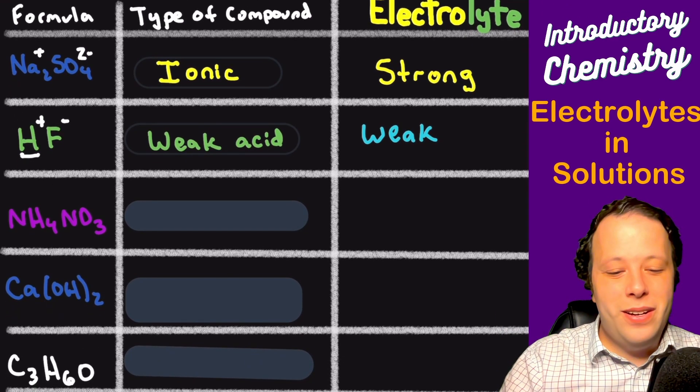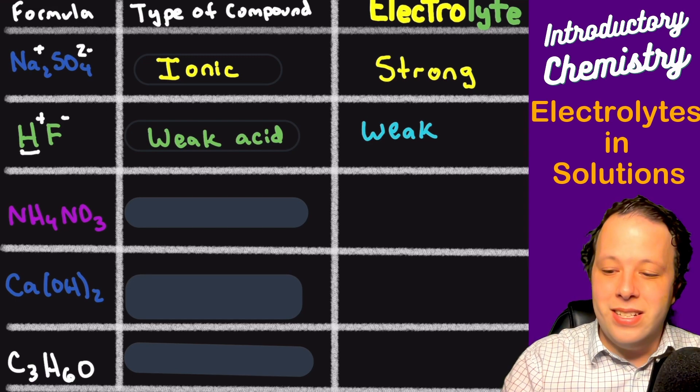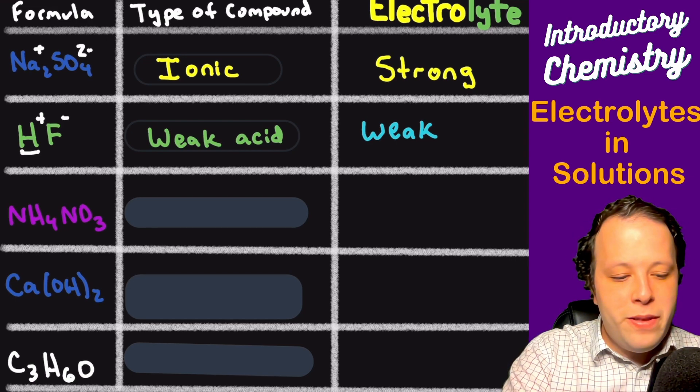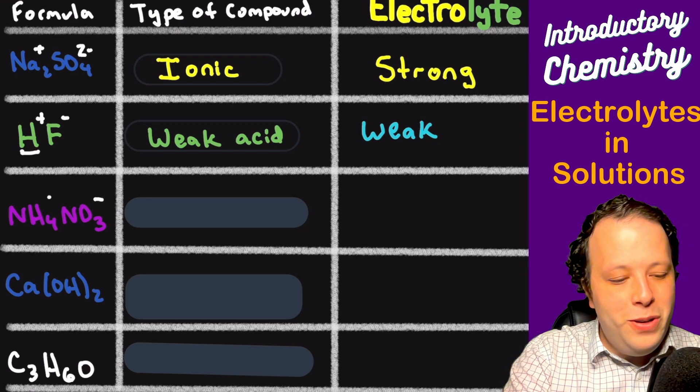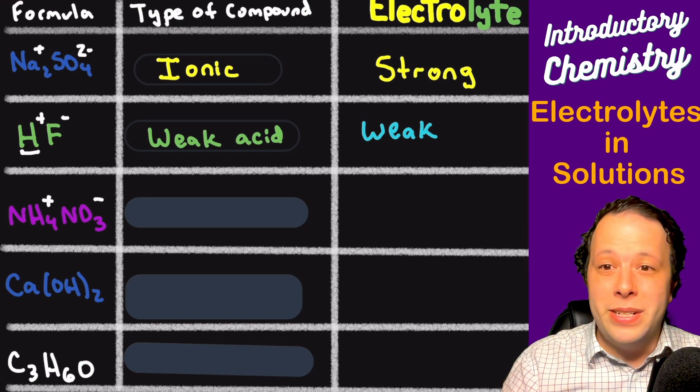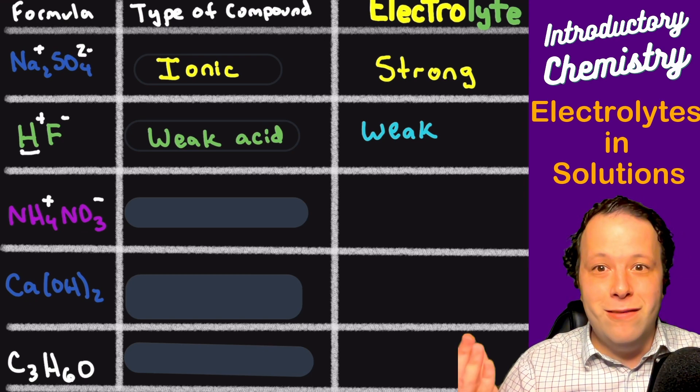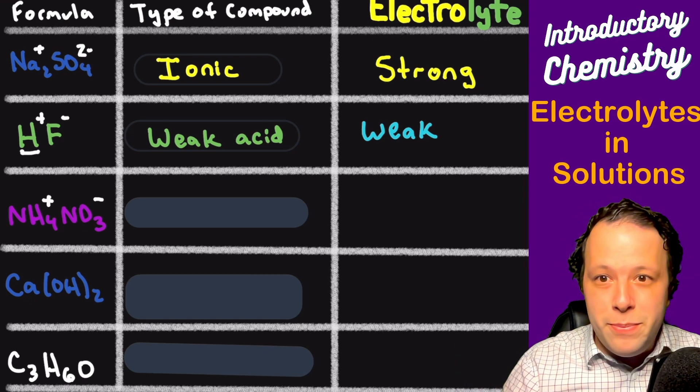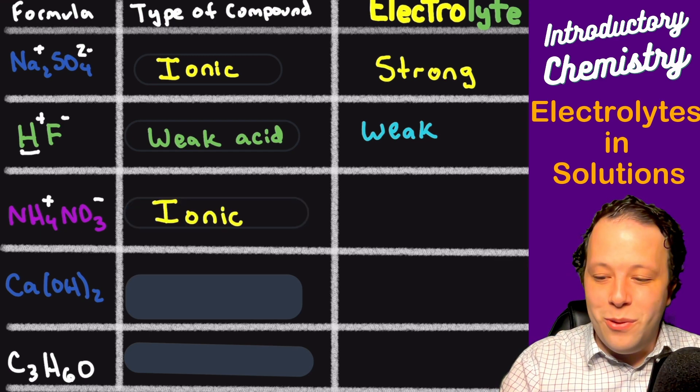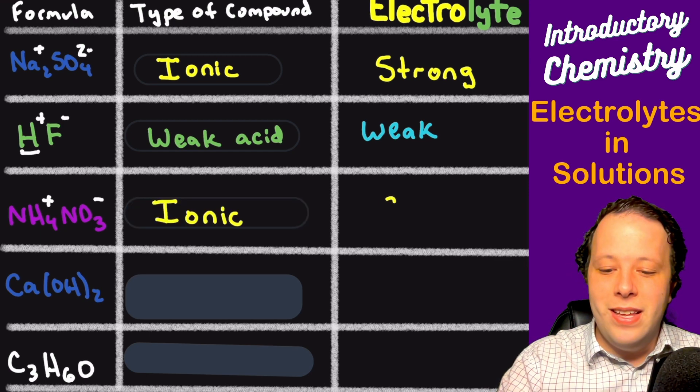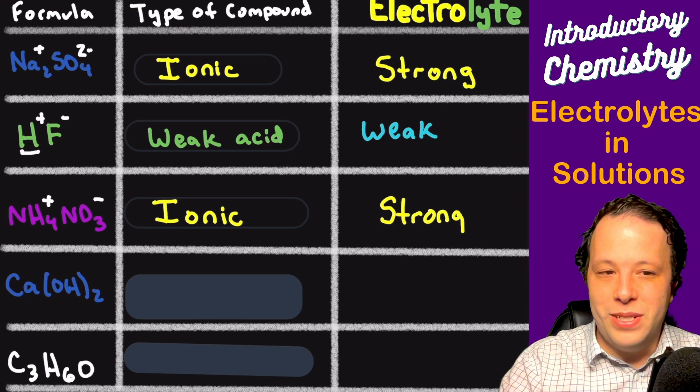The next one, ammonium nitrate. So how can we label that? Well I remember that nitrate is a polyatomic. Well what about ammonium? Well ammonium is also one of our polyatomics. It's in fact the only positive polyatomic. We see it's balanced. Everything looks good. So that means it's ionic. Therefore, what does that tell you about it? That it's going to be a strong electrolyte as a result.